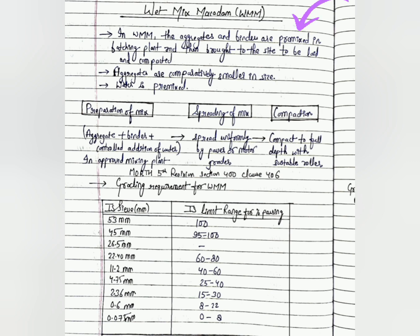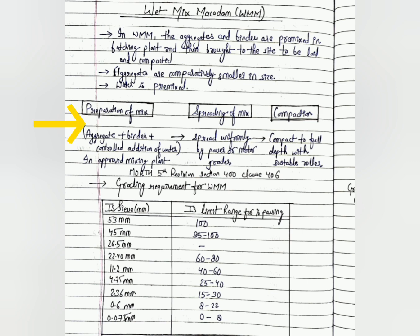Water is pre-mixed in the Wet Mix Macadam process. The process involves preparation of mix, spreading, and compaction. Aggregate and binder are mixed with controlled addition of water in an approved mixing plant, then spread uniformly by paver or motor grader, then compacted to full depth with a suitable roller.